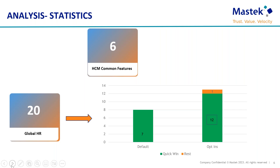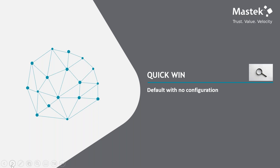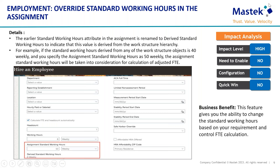One is the rest feature which involves testing as well as some setup from the user side. We'll go through each one of them one by one. First, let's look at the quick win default features, which require minimum or no configuration at all. The first feature is override standard working hours in the assignment. The earlier standard working hours attribute in the assignment has been renamed as derived standard working hours to indicate that this value is derived from the work structure hierarchy. The business benefit is that it gives the ability to change standard working hours based on requirement and to control the FTE calculation.